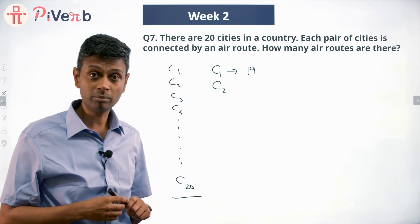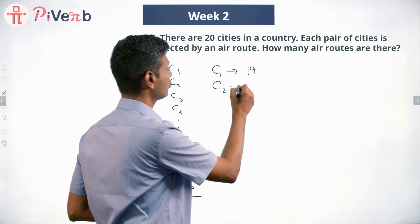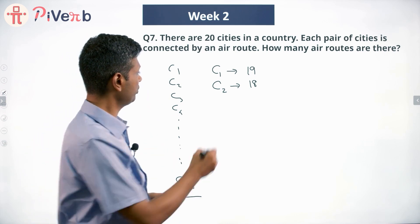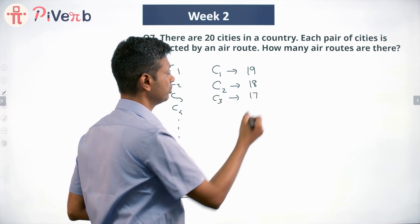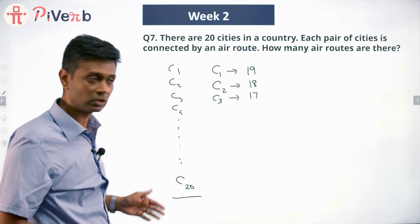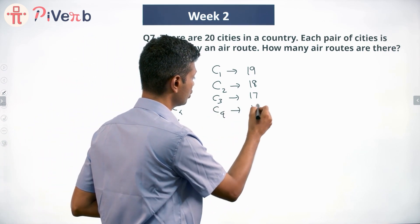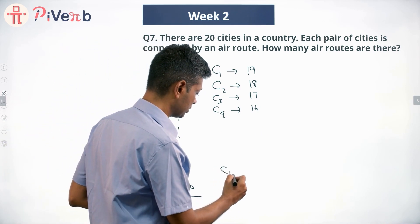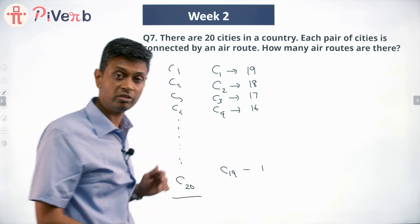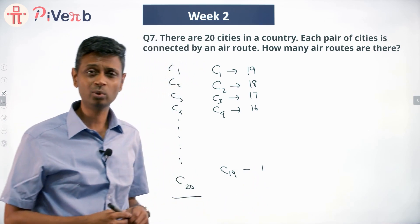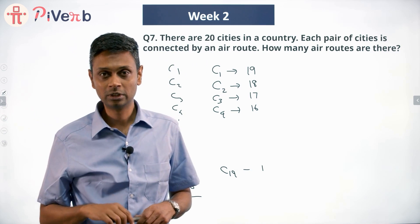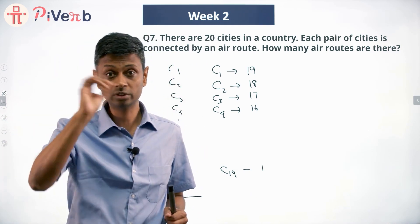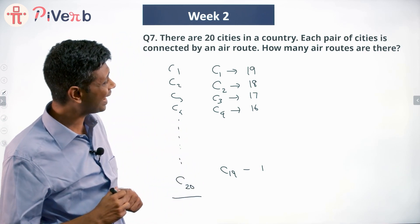Since C1-C2 has already been counted, from C2 I'll count only the remaining 18 routes. From C3, how many will I count? 17. From C4, 16, covering C4 to C20. All the way to C19: 1 route, which is C19-C20. From C20 there are zero routes, because everything connecting to C20 has already been counted from the other cities.